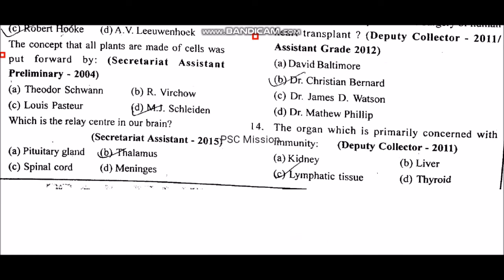Which is the relay center in our brain? The organ which is primarily concerned with immunity is the lymphatic tissue.